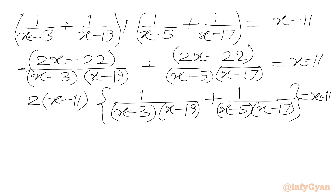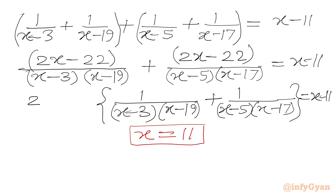Now if we put x = 11, it will satisfy our equation. So x = 11 is the second root of this equation and we can remove this factor. The RHS will be 1 only.